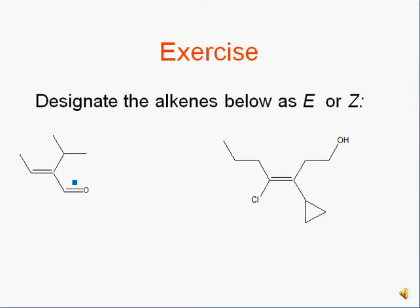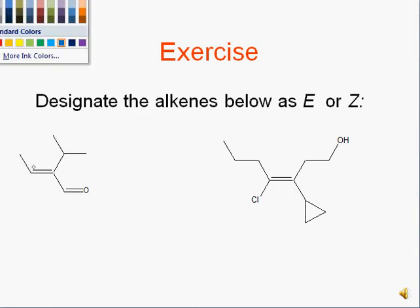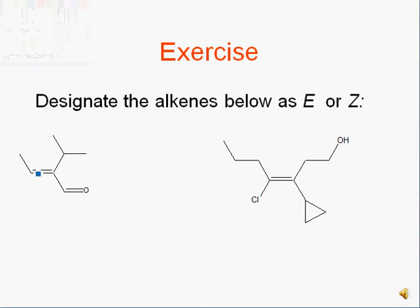So we need to analyze each of these alkenes and look at each side of the double bond one at a time, look at the two groups on the left and the two groups on the right and decide which has higher priority using the Cahn-Ingold-Prelog rules.